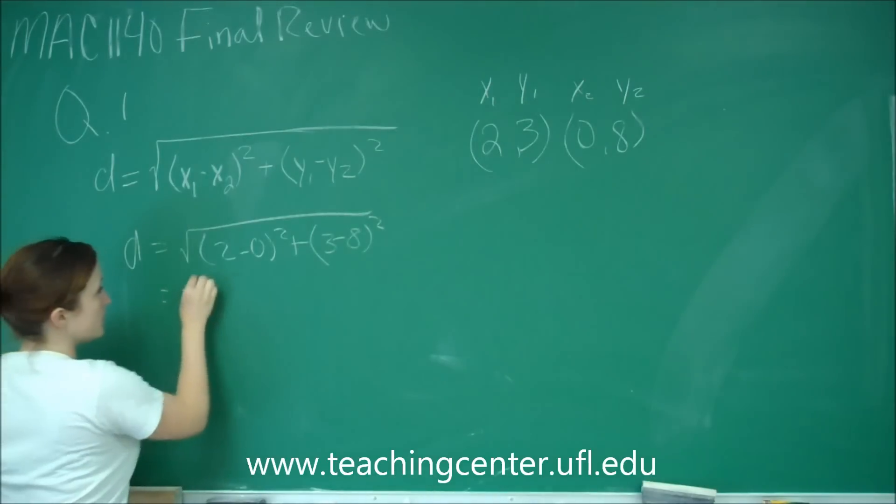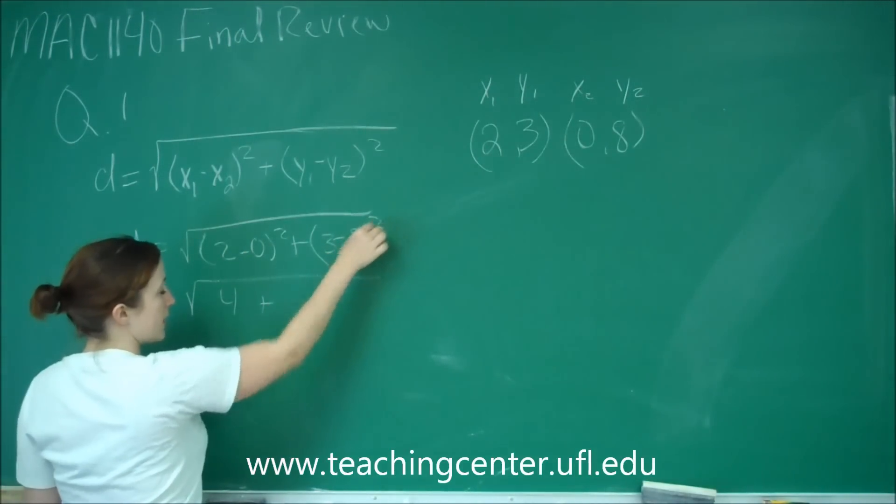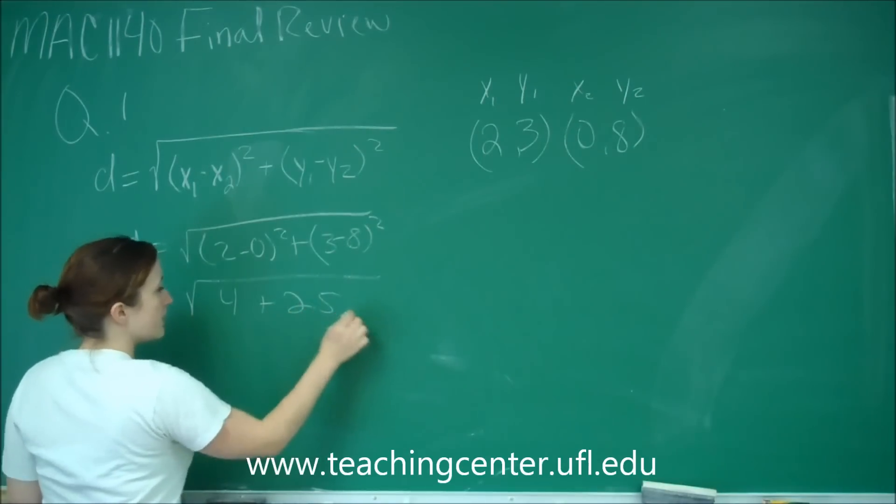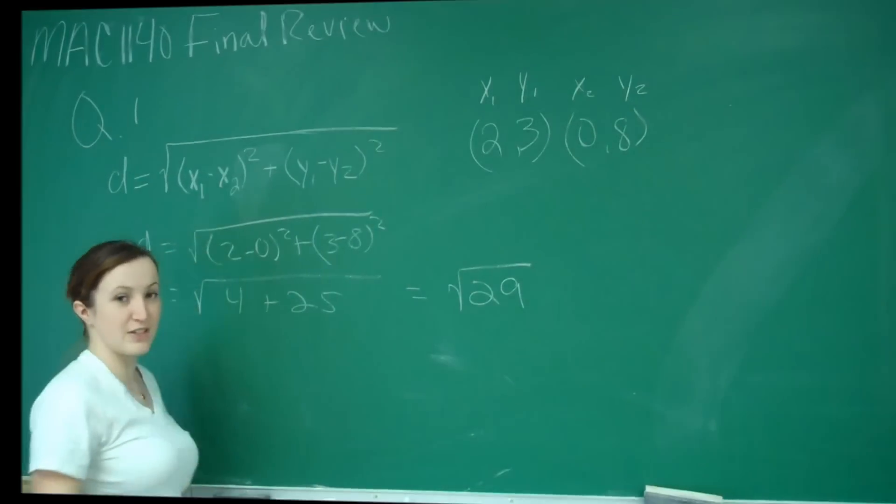So that's equal, now we just plug and chug, to 2 squared is 4 plus, this is negative 5 squared, which is 25. So this is equal to the square root of 29.